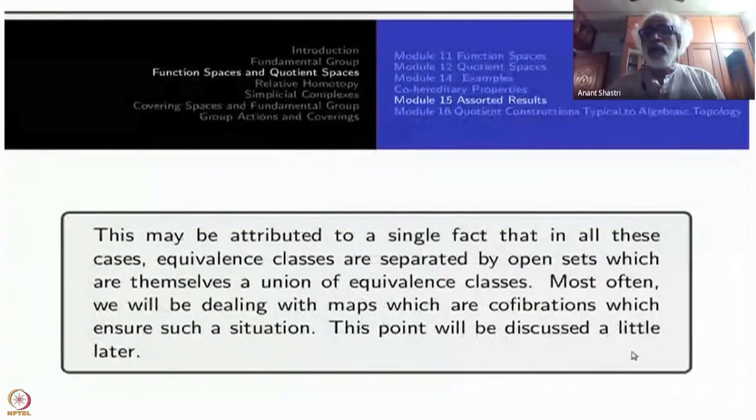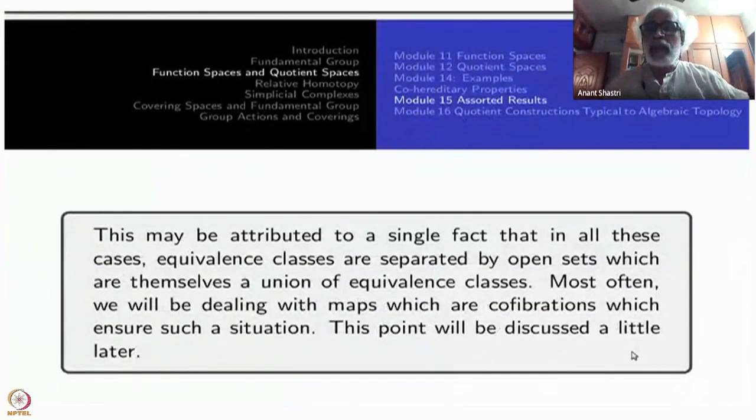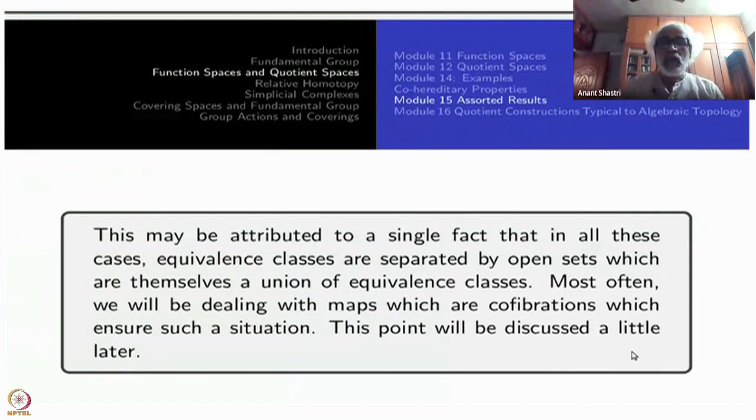The one single fact which can be attributed to this phenomenon is that equivalence classes are separated by open sets which are themselves union of equivalence classes. Most often we will be dealing with maps which are co-fibrations which will ensure the situation.